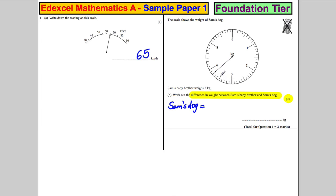So one, two, three, four, five, six, seven, eight. It's 3.8 kilograms. So Sam's dog is 3.8 kilograms.